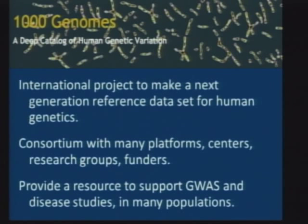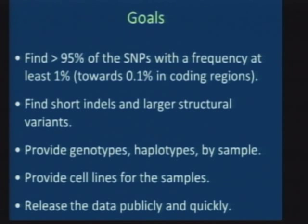What we hope is that it will provide a resource to support genome-wide association studies — GWAS — in many different populations, not just one, but hopefully across the world pretty much. We set ourselves some quite specific quantitative goals: we set out to find at least 95 percent of all the SNPs in the accessible human genome at a frequency of 1 percent in the population, and then in genomic regions to try and push further down into the rare variants, going down towards 0.1 percent.